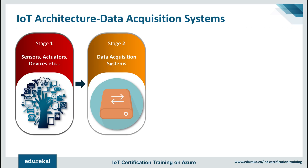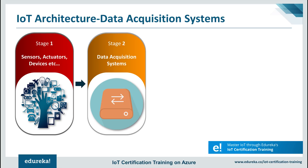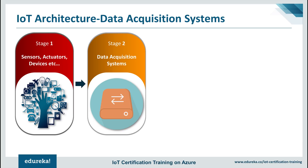Data acquisition systems perform these data aggregation and conversion functions. They often sit in close proximity to the sensors and actuators. For example, a pump might contain half a dozen sensors and actuators that feed data into a data aggregation device which also digitizes the data. There would be an adjacent gateway device or server which would then process the data and forward it to the next stages.